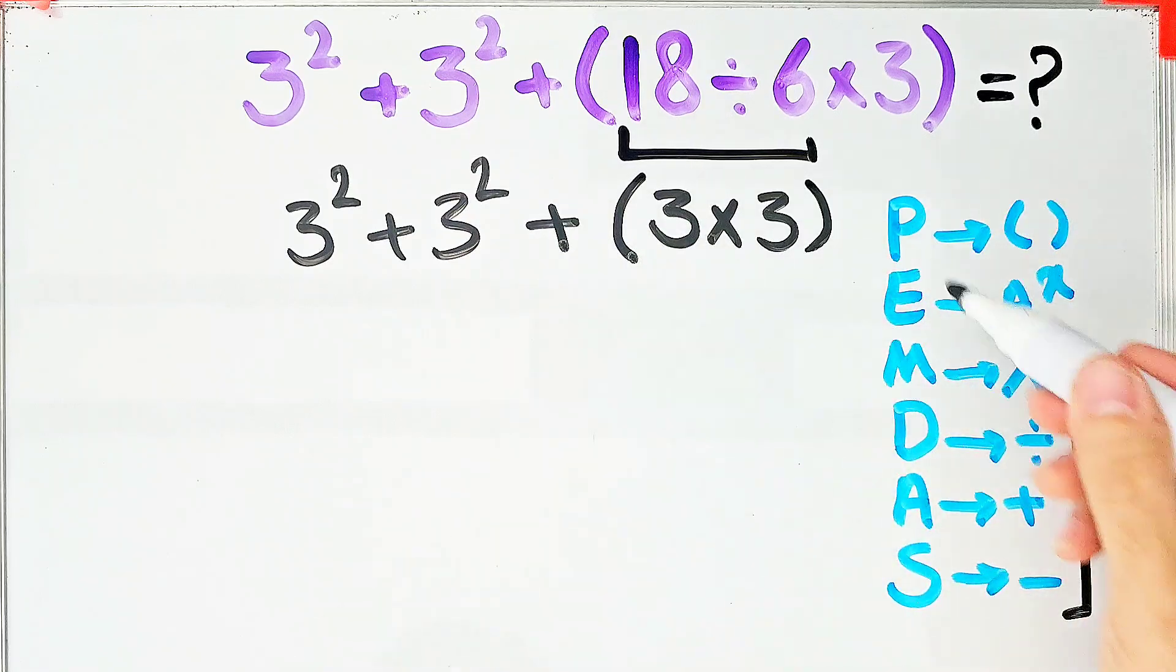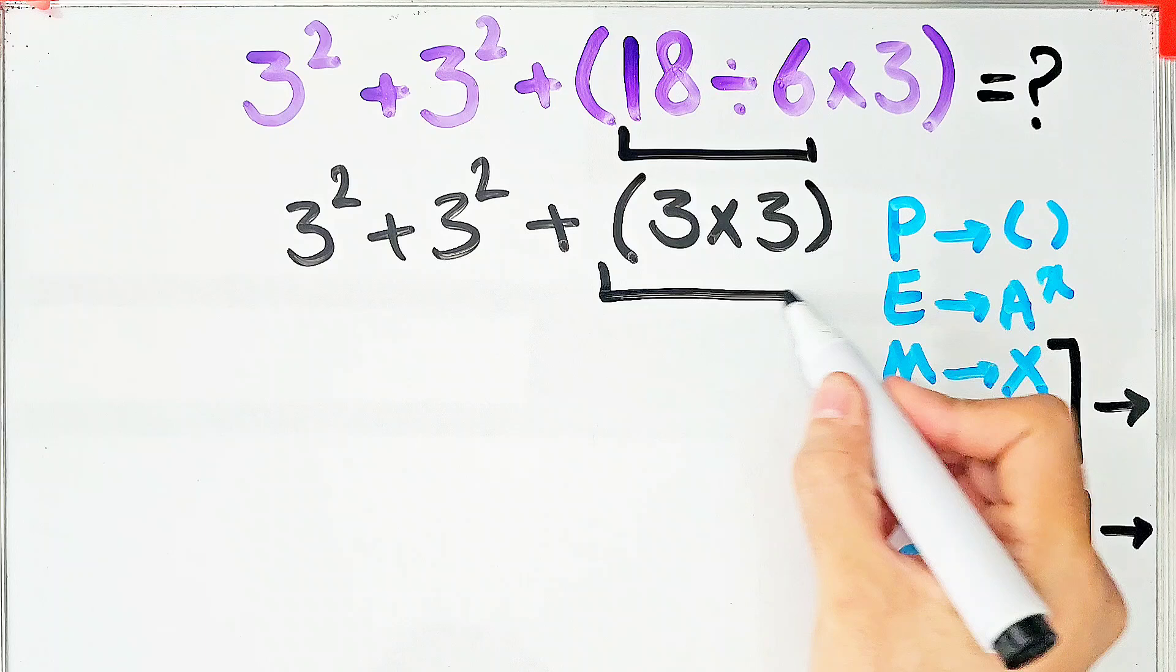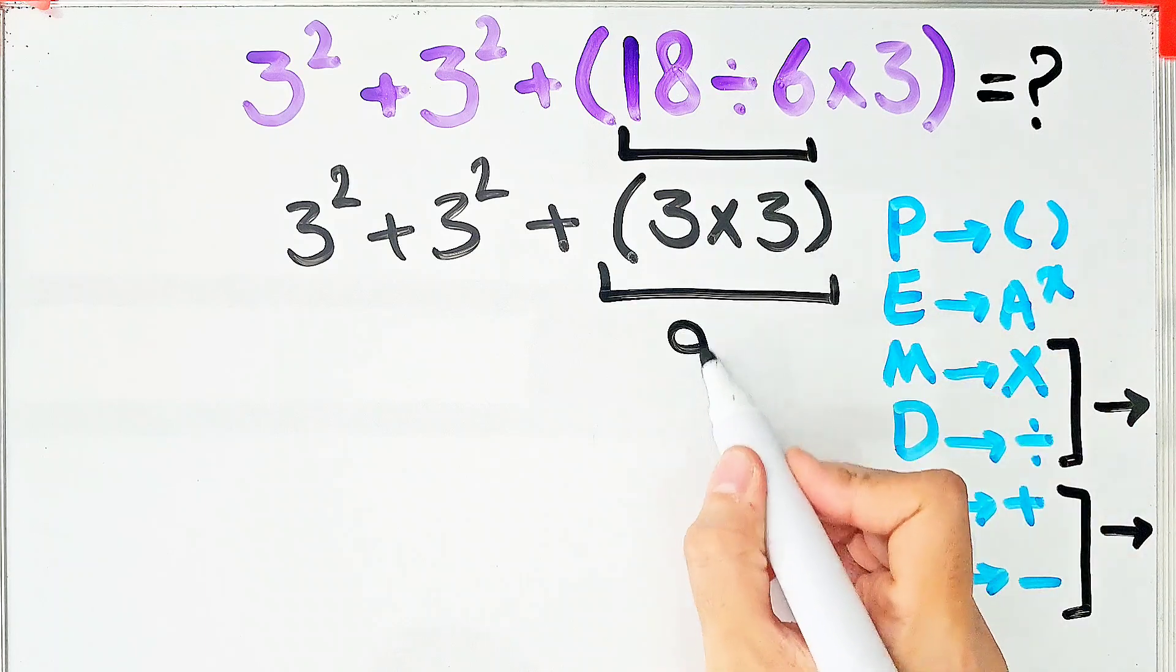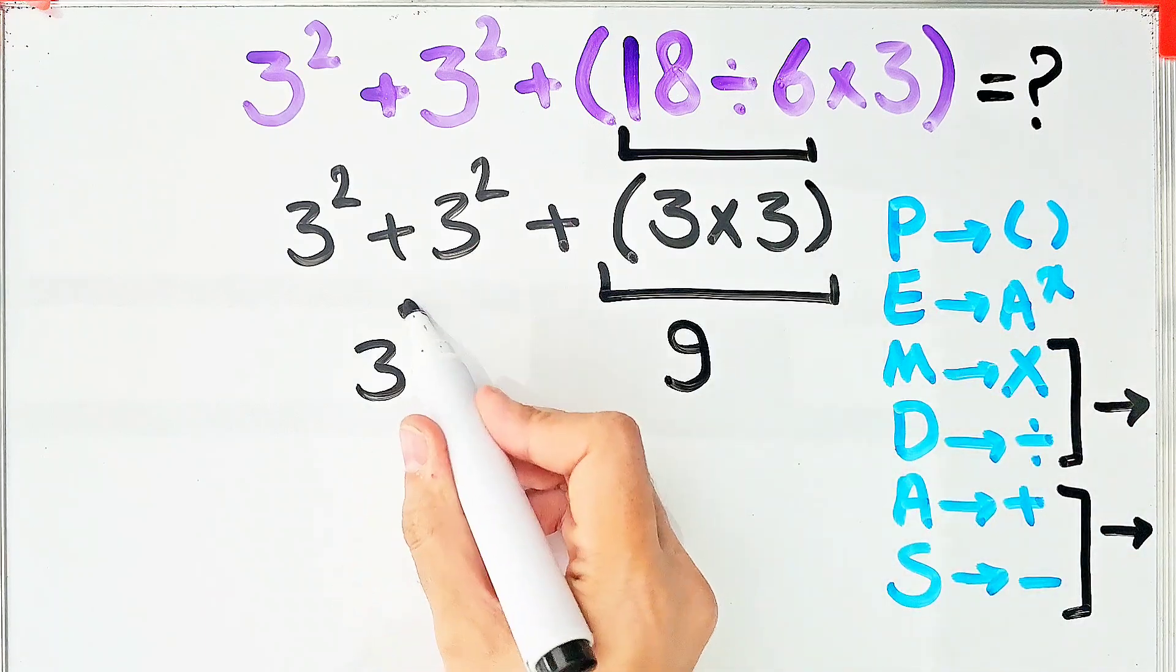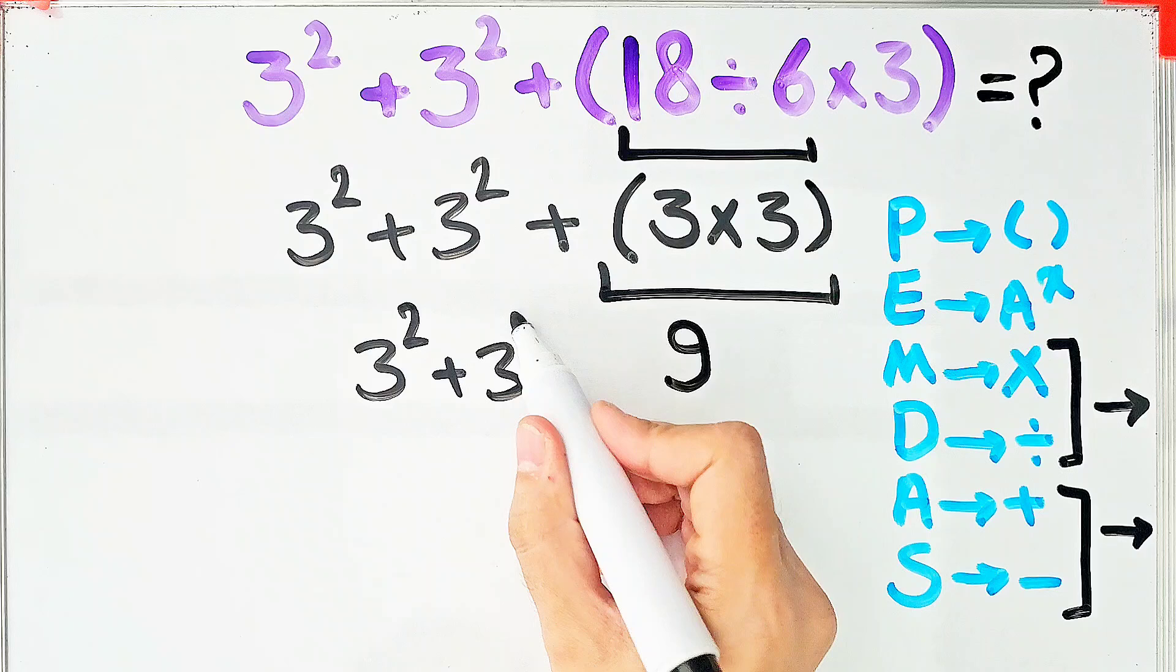Again, we simplify the parentheses. 3 times 3 equals 9. Now we have 3 to the power of 2 plus 3 to the power of 2 plus 9.